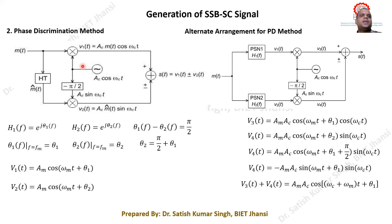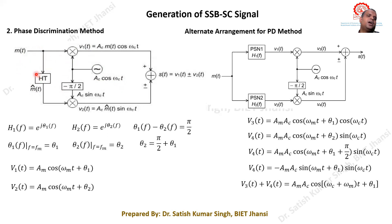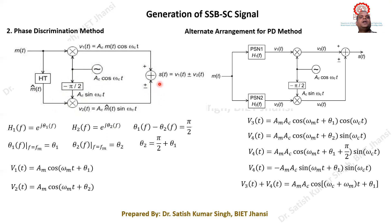In the phase discriminator scheme, the message signal m(t) is multiplied with carrier AC·cos(ωCt). A separate circuit produces m̂(t), the 90° phase-shifted (Hilbert transform) version of m(t). This m̂(t) is multiplied with the quadrature carrier AC·sin(ωCt). The two products are then added or subtracted: addition gives LSB, subtraction gives USB, depending on the chosen sign.